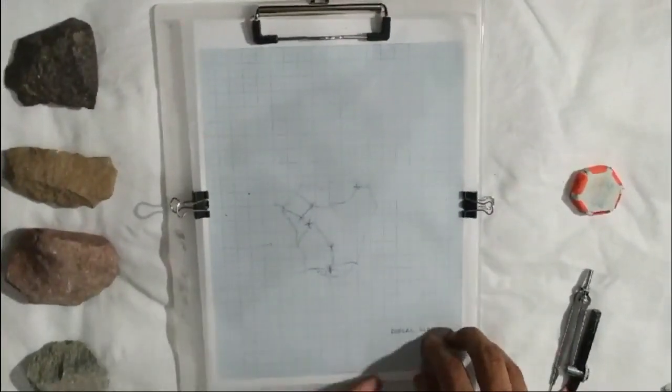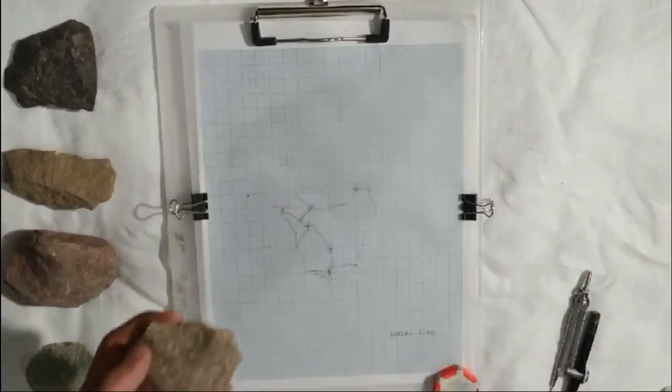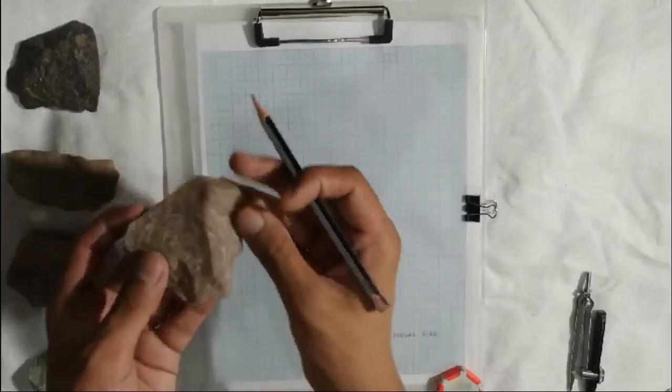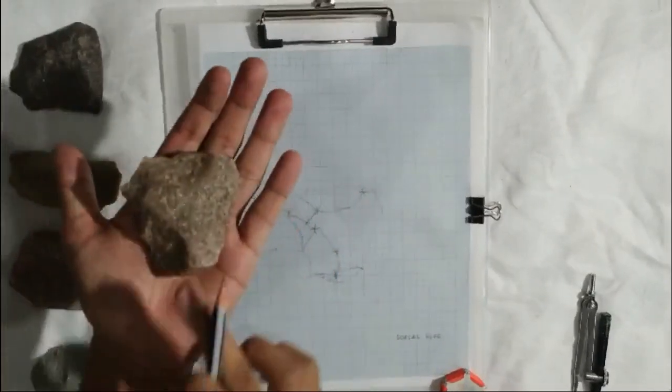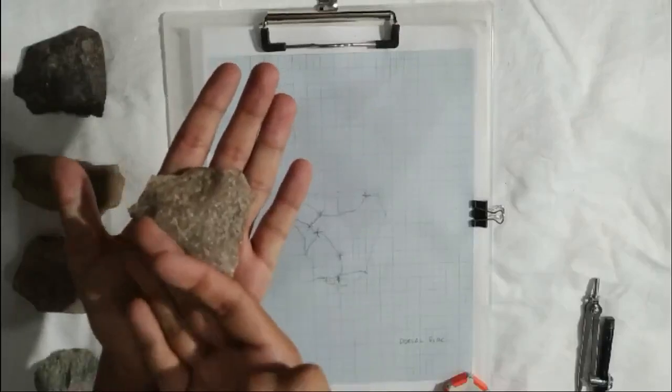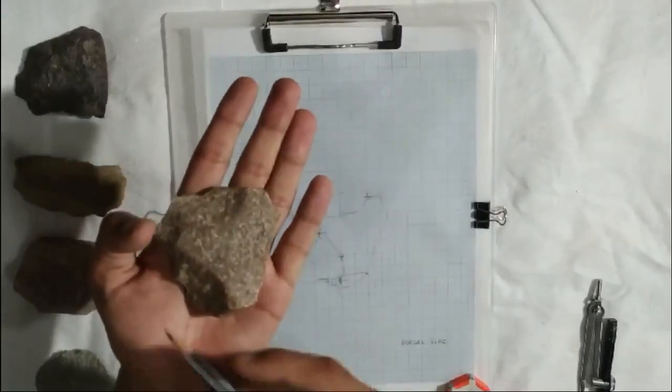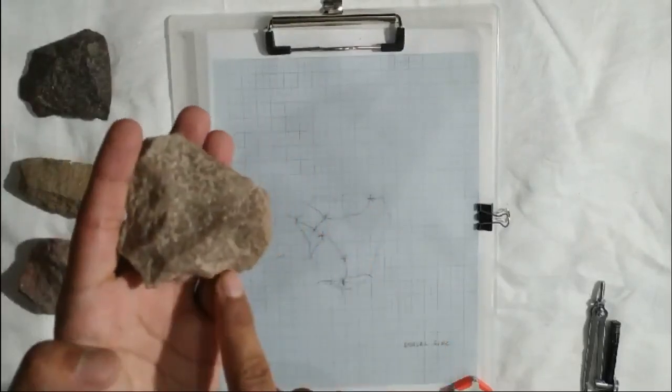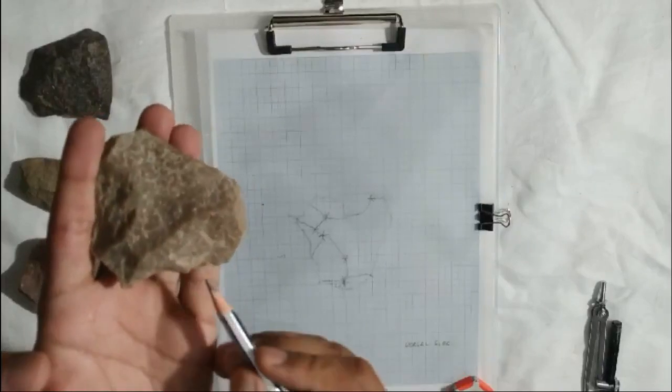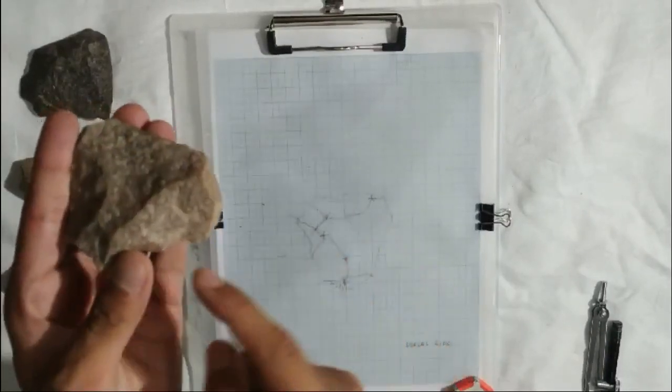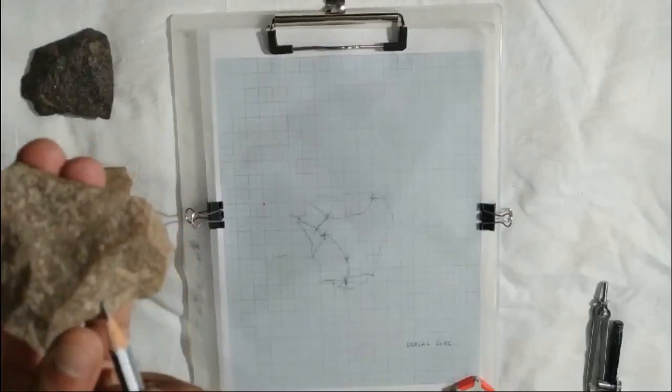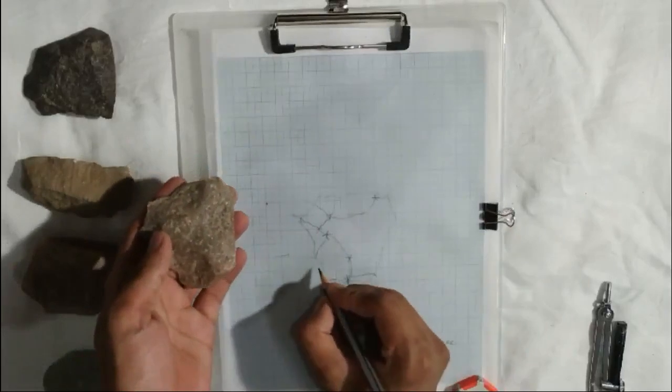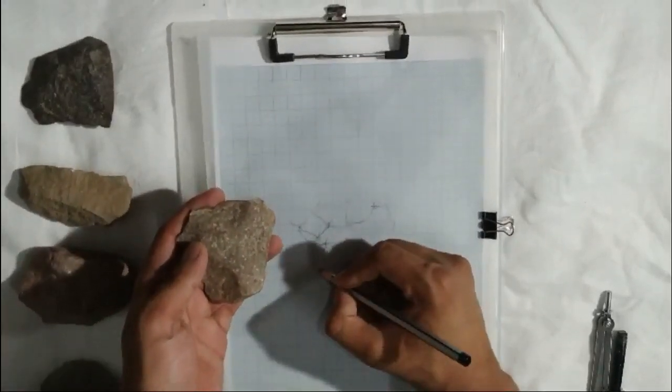Let us apply this to a stone tool. On this particular flake scar, the gradient is steep. Hence, the lines would be closer. And as the point of percussion is somewhere here, it was removed by applying a hit here. You can see the ripple marks coming out. So we will draw the lines like these.